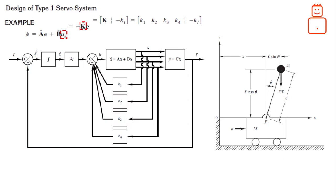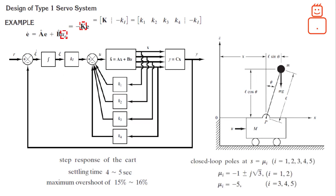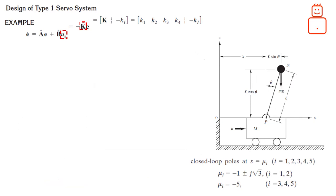To obtain a reasonable speed and damping in the response of the design system, we can let the settling time to be between 4 and 5 seconds, and the maximum overshoot to be between 15 to 16% in the step response of the cart. To achieve such performance in the closed loop, let us choose five stable poles in the locations shown. The first two poles are complex, while the last three poles are real.